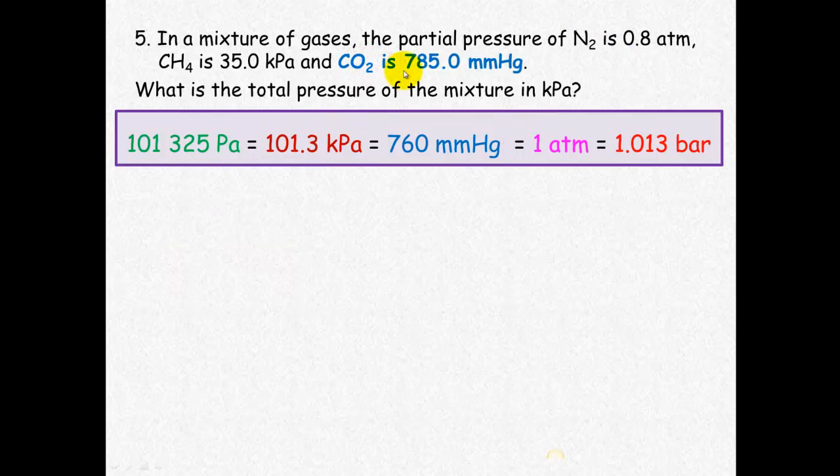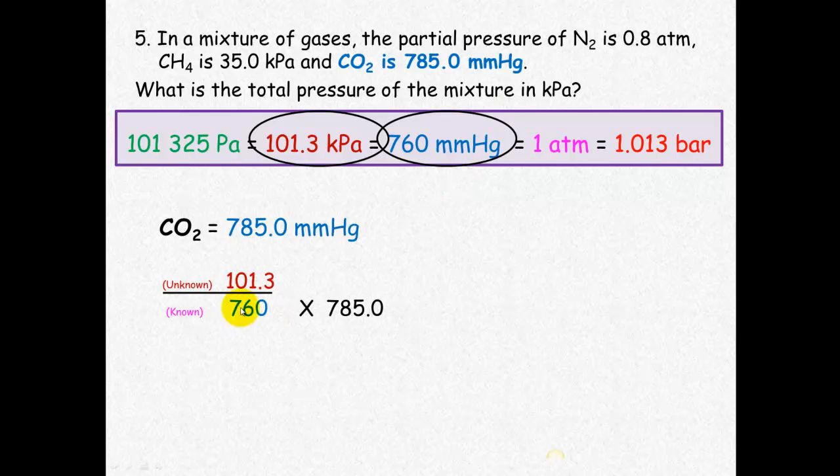Now we need to have a look at carbon dioxide. We don't need to look at methane because that's already in kilopascals. It's carbon dioxide. We have 785 millimeters mercury. Kilopascals are our unknown and millimeters mercury are our known. So we use those for the ratio of unknown over known.